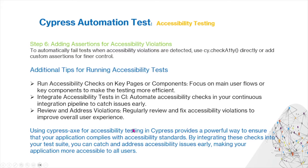Using Cypress AXE for accessibility testing provides a powerful way to ensure that your application complies with accessibility standards. By integrating these checks into your test suite, you can catch and address accessibility issues early, making your application more accessible to all users.